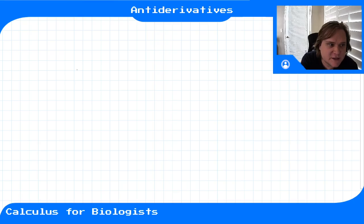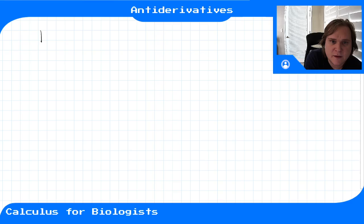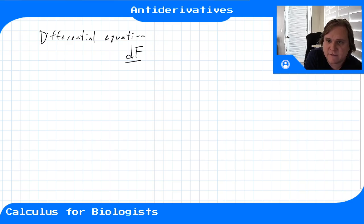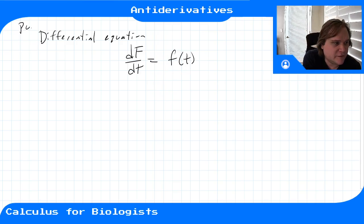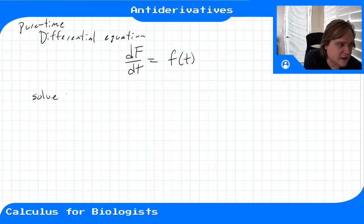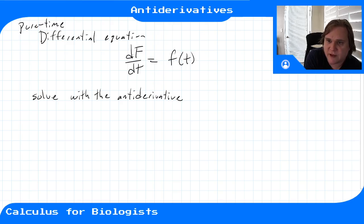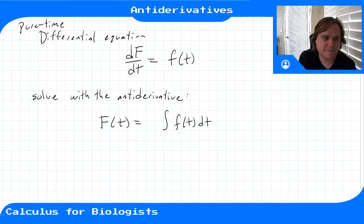Another way to solve differential equations is to use anti-derivatives, sometimes called integrals. If we have a differential equation dF/dt equal to some function of time f(t), we can solve this with the anti-derivative. We say that if the derivative of capital F is little f, then capital F is the anti-derivative of little f — so F(t) is the anti-derivative of f(t).